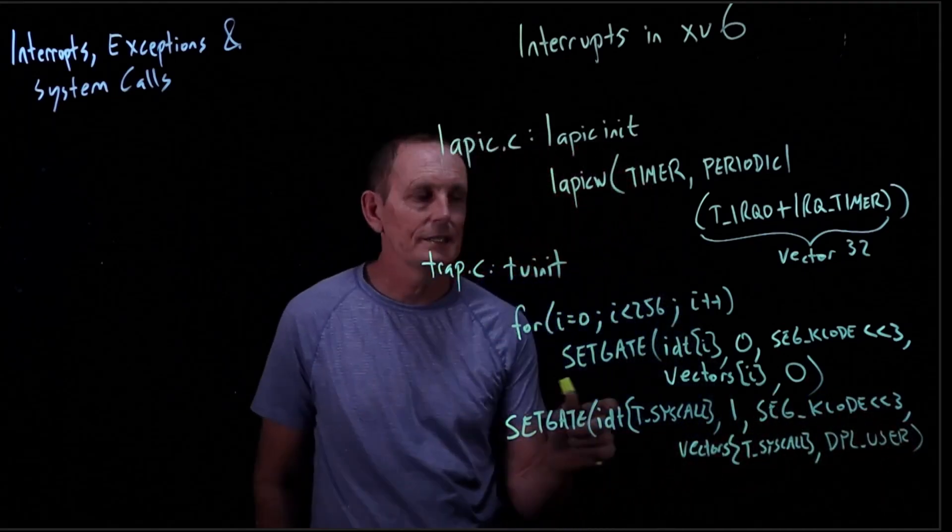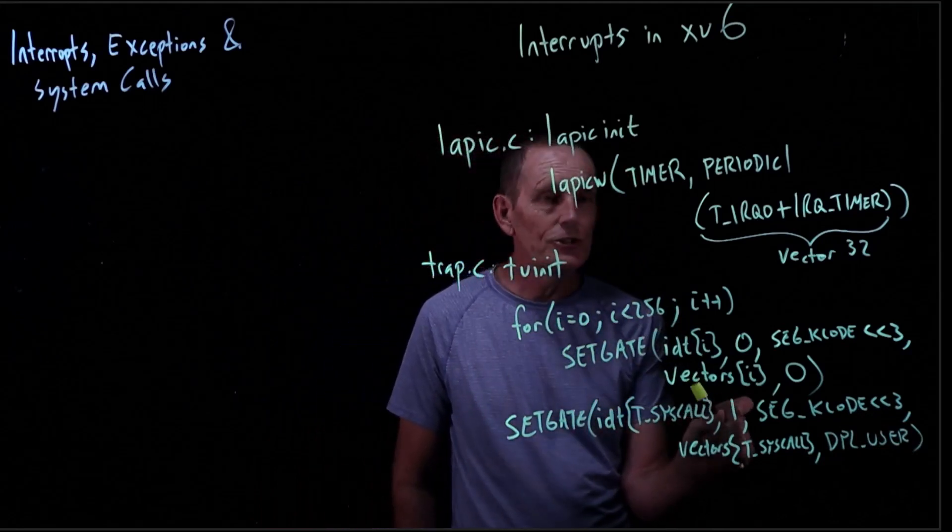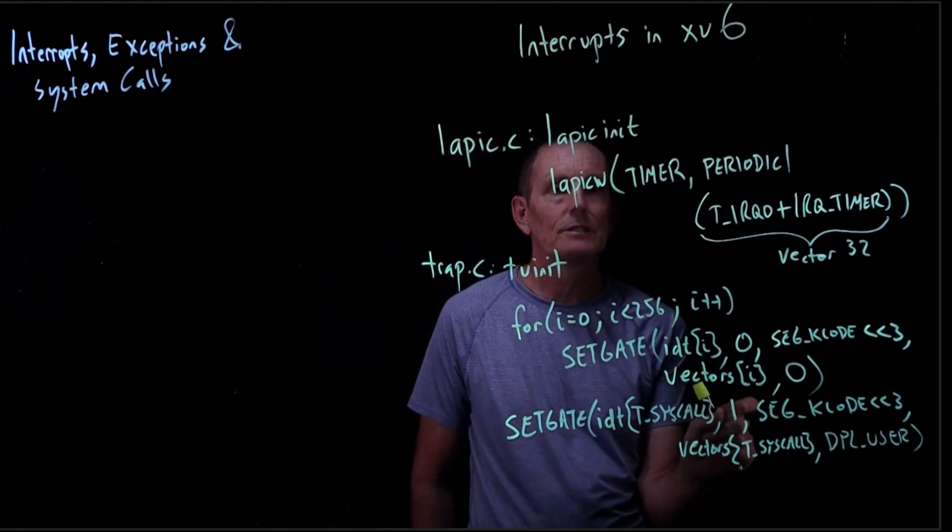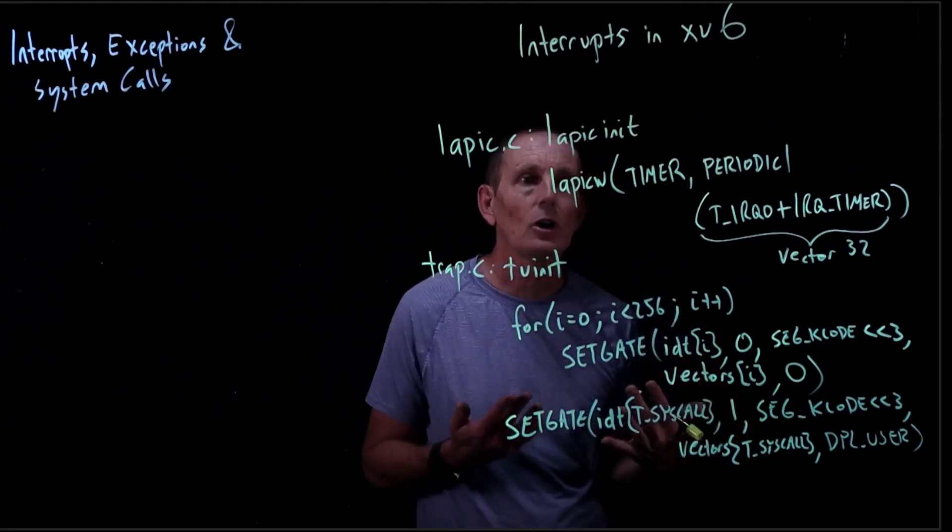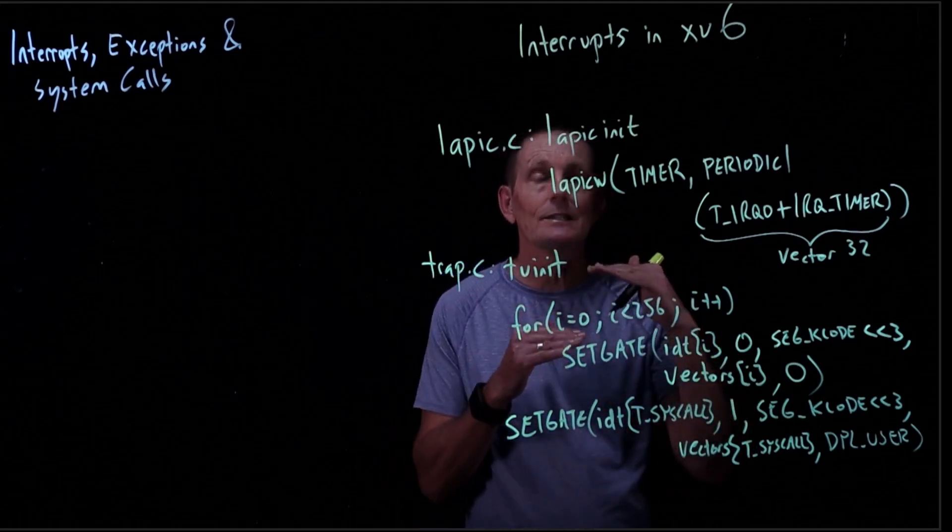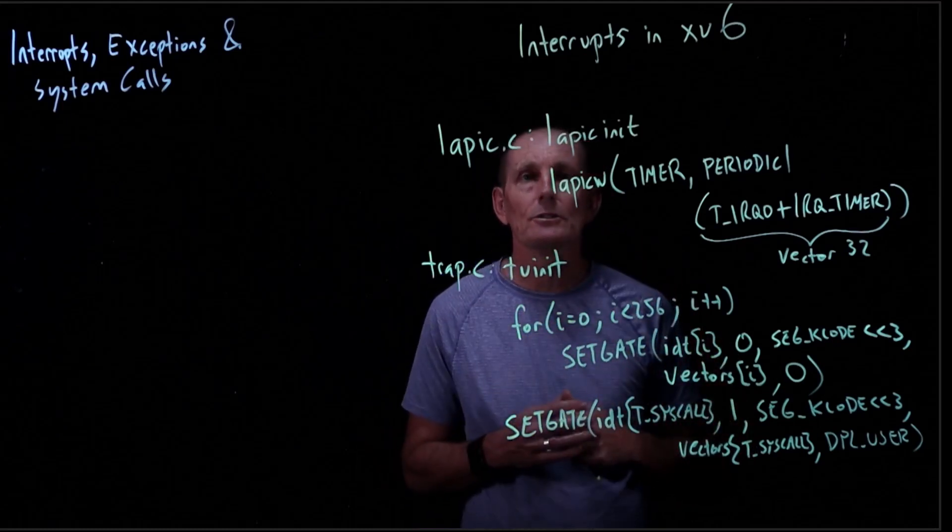So what this says is for the system call interrupt, we do want to enable interrupts while this is happening. So if we're in the middle of handling a system call, so we're in the kernel handling a system call, we do allow an interrupt to occur.